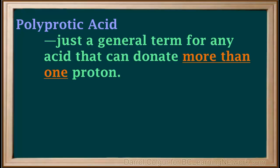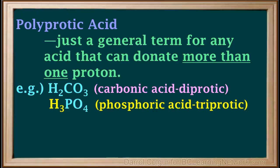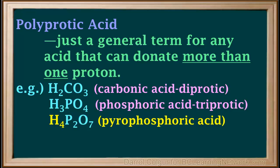Polyprotic acid is a general term for any acid that can donate more than one proton. Examples include carbonic acid, which is diprotic; phosphoric acid, which is triprotic; and pyrophosphoric acid, which has four protons it can donate.